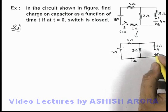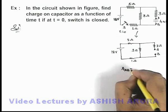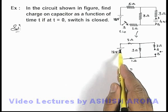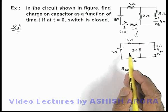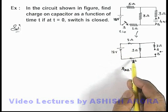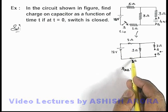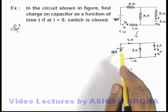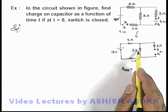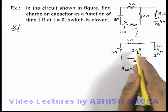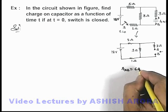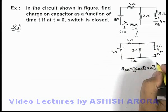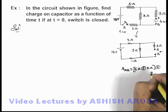Now if we consider the equivalent resistance across terminals A and B, we can see that if this 18 volt battery is considered to be ideal, here 5 ohm is connected in series with this 1 ohm resistance which is effectively 6 ohms. This 6 ohm resistance is in parallel with this 3 ohm resistance, and this group is in series combination with this 3 ohm resistance.